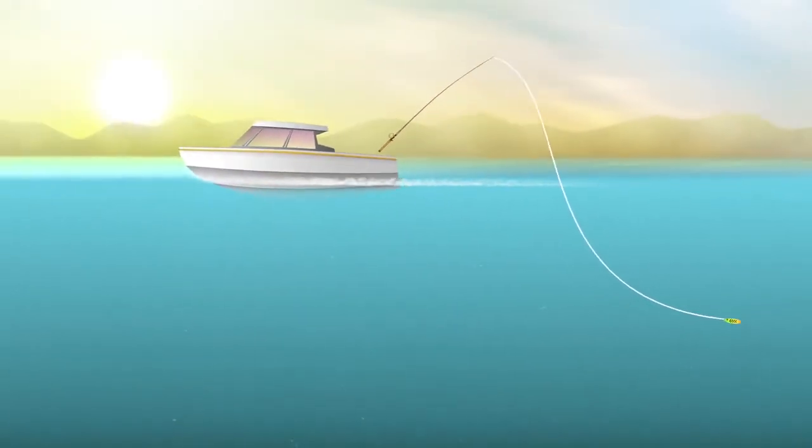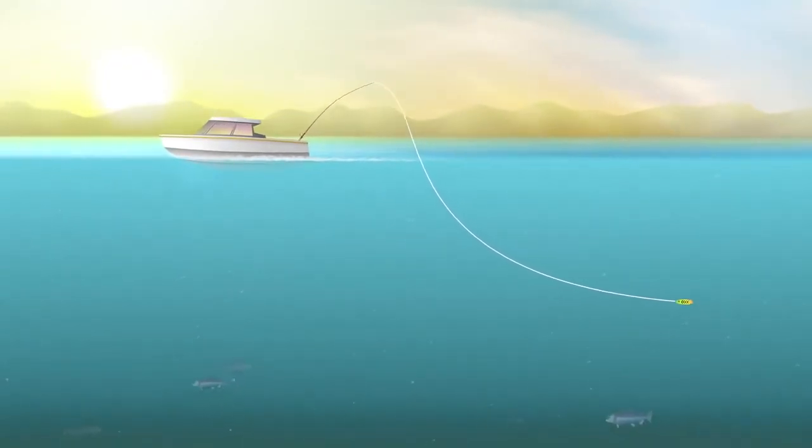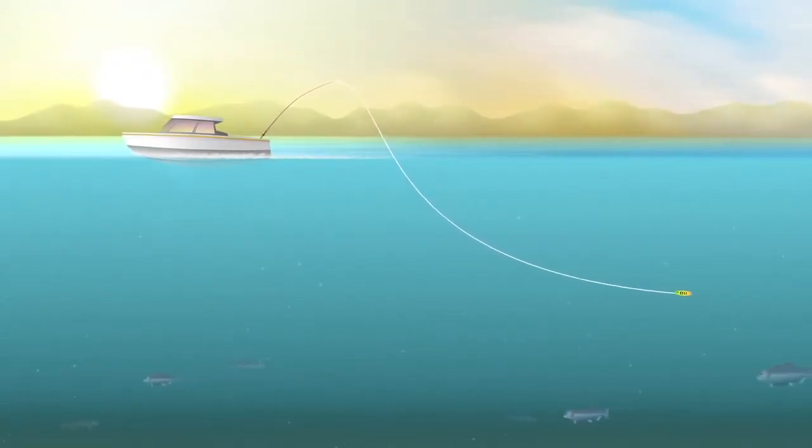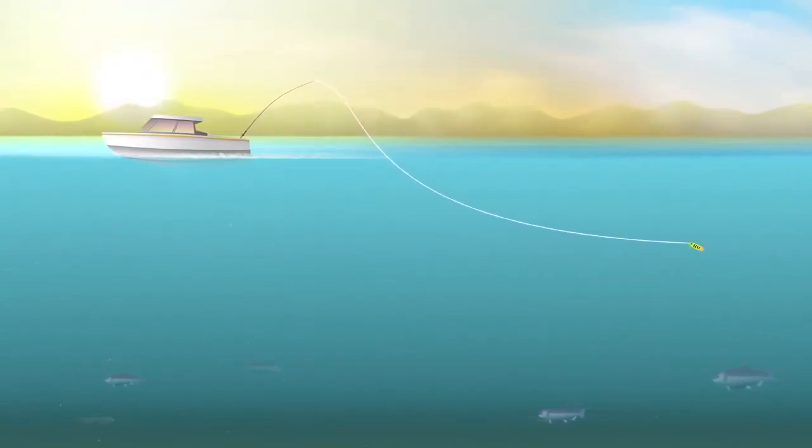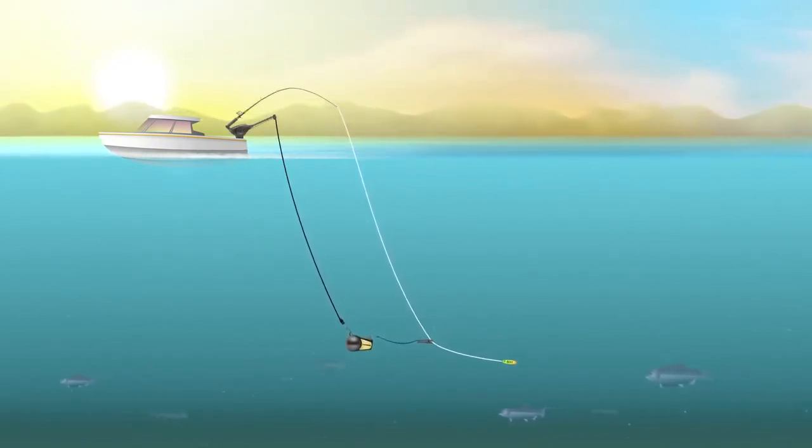When you're angling in deep water, controlling the depth of your lure is key. If you're not using a downrigger, your lure can drift up towards the surface away from the fish. But when you fish with a downrigger, your bait goes where they are and stays there while you troll.